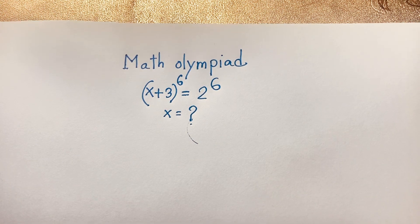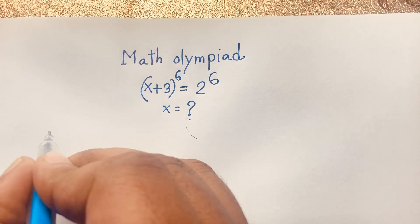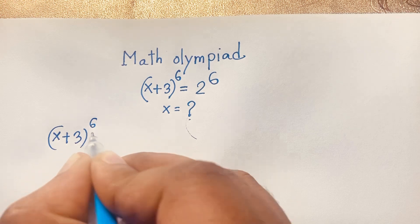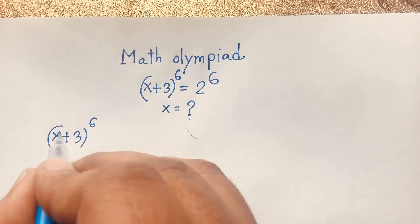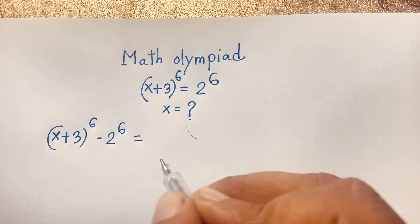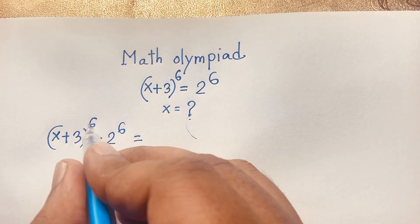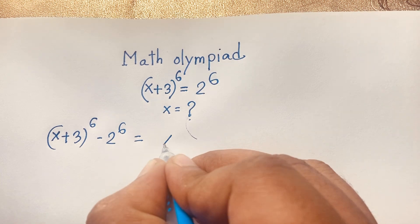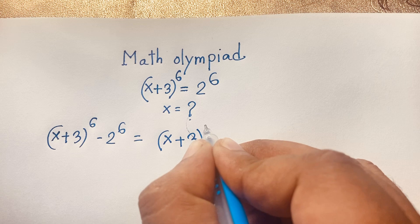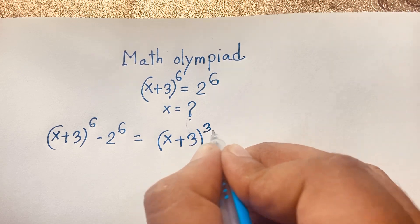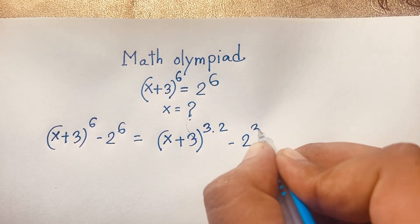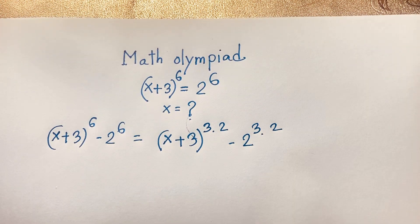First of all, I can see the question. It will be (x+3) whole to the power 6. And if I move 2 to the power 6 to this side, it will be negative 2 to the power 6. Now in this expression, you can see (x+3) whole to the power 6. It will be (x+3) whole to the power 3×2, and 2 to the power 3×2, which is also 6.